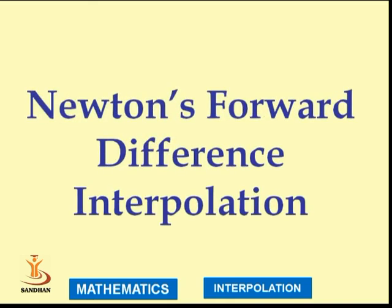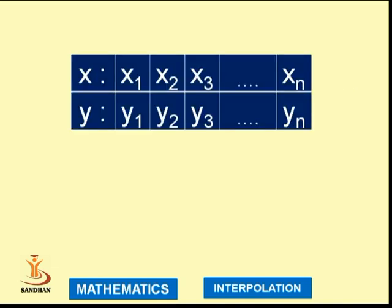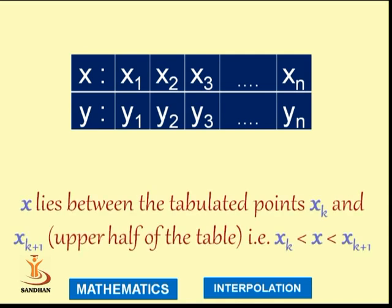Now, Newton's forward difference interpolation method. Let us assume we have n points x₁ to xₙ, y₁ to yₙ in a table. If x lies between the tabulated points xₖ and xₖ₊₁—that is, in the upper half of the table—